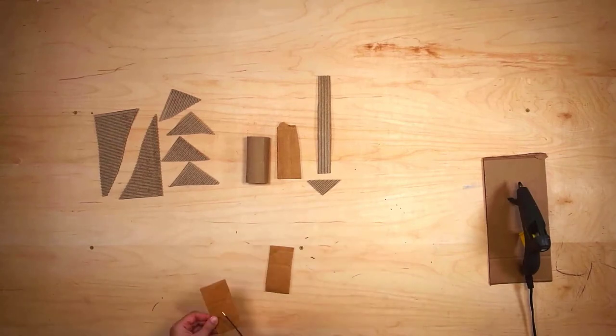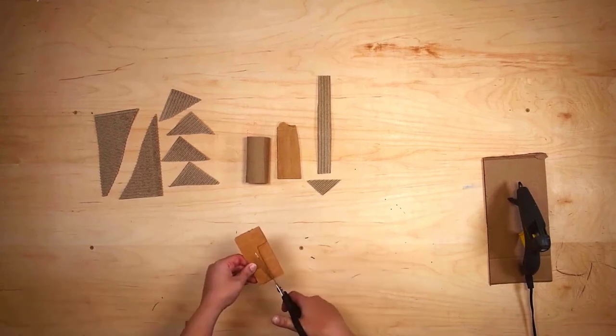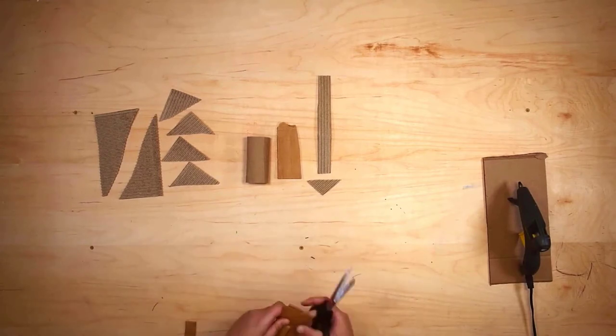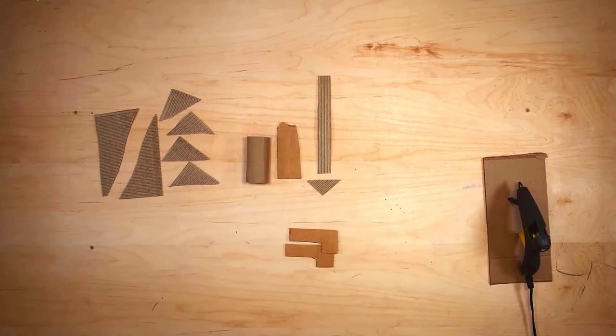Alright, but now we're going to get to maybe one of the more important pieces of cardboard, and that's creating some sort of L shapes. And these are going to be part of the head of our dragon. So I'm going to go ahead and get some L shapes ready here.